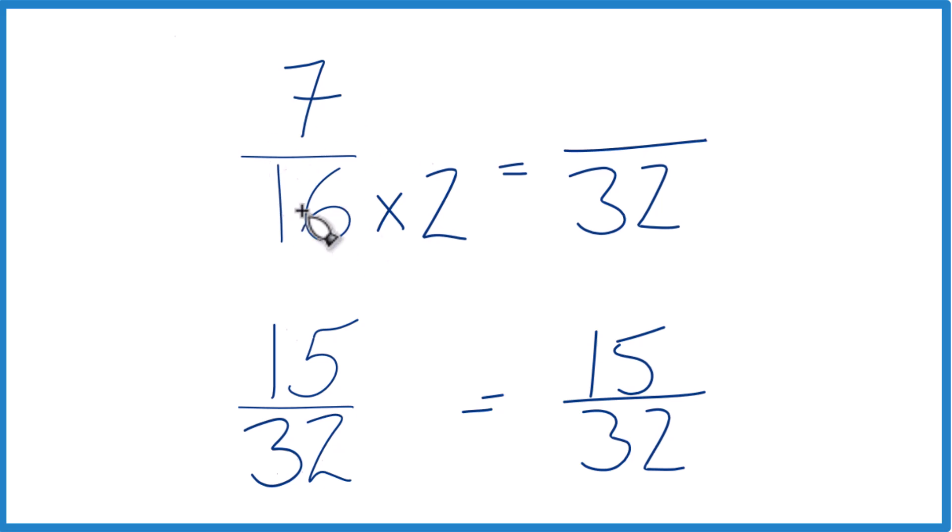But we can't just multiply the denominator here by 2. We also need to multiply the numerator by 2. 2 over 2 is just 1, so we don't change the value, just the way it's represented. 7 times 2, that's 14. And 14/32, that's the same thing, or the same value as 7/16.